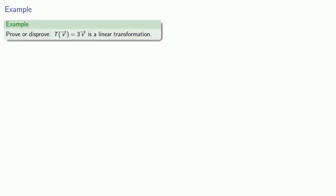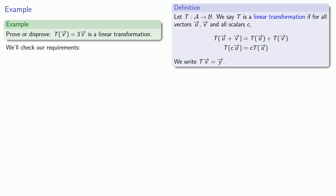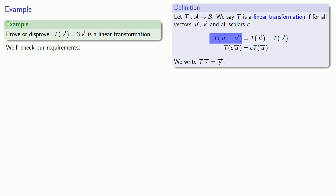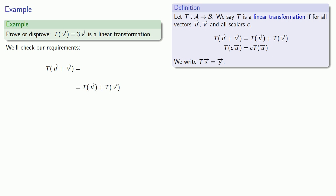So let's consider the following problem. We want to prove or possibly disprove that something is a linear transformation. We'll check our requirements for what makes a linear transformation. The first requirement is that a linear transformation must take a sum of vectors into the sum of the transformed vectors. It's often convenient to proceed in the following manner: what I'd really like to happen is that T applied to the sum u plus v will give me T applied to u plus T applied to v. So I have this starting point T applied to u plus v, and this ending point T of u plus T of v. I want to build a mathematical bridge from the starting point to the ending point.